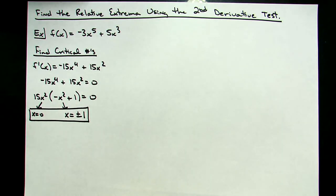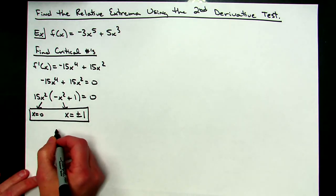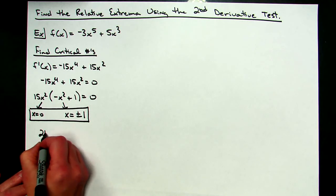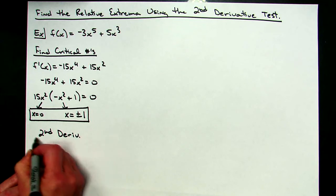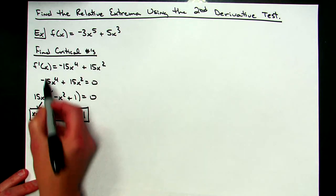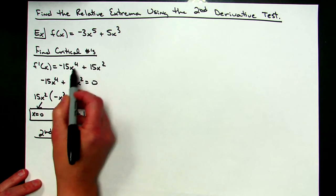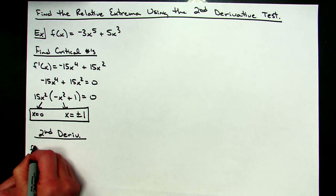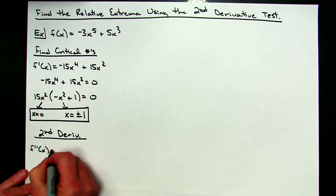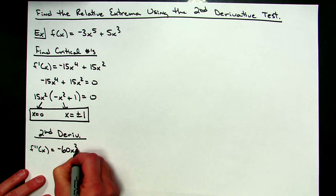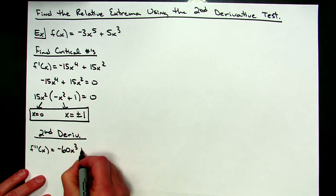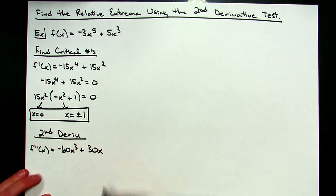Those critical numbers are the values I'm going to test in my second derivative. Let's go ahead and calculate the second derivative. Looking at the first derivative, f double prime of x is going to equal negative 60x to the third plus 30x. A pretty simple second derivative.